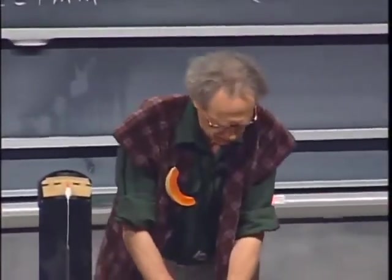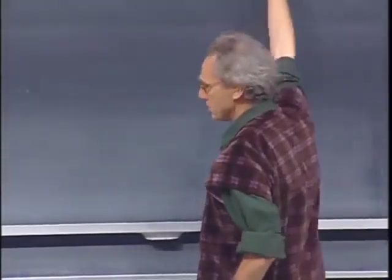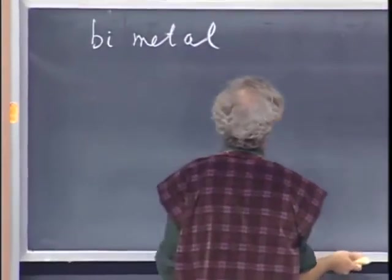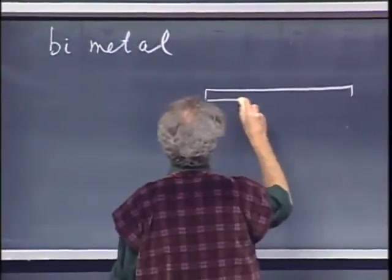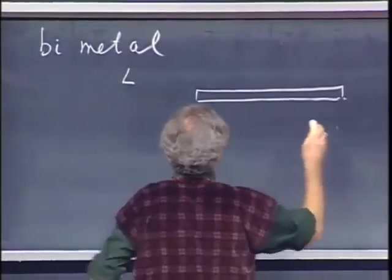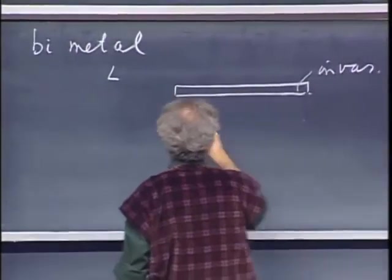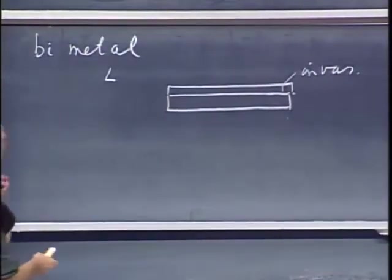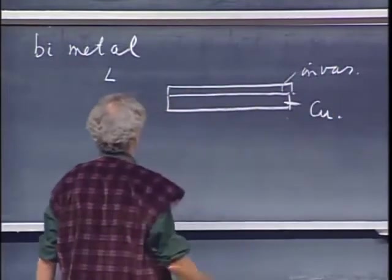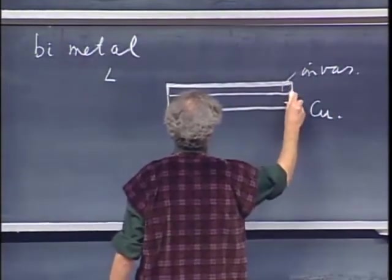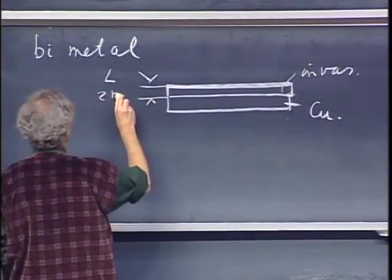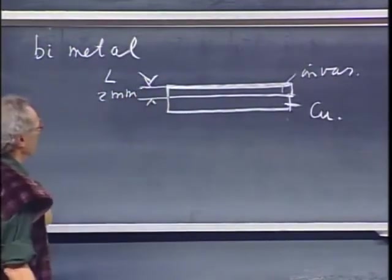A very important implication and application of the expansion of metals is what we call bimetals. They're all around you. A bimetal is the following. Say I have a strip here, length L, and I have another strip here which is attached to it so that they cannot slip relative to each other, and let this be copper.